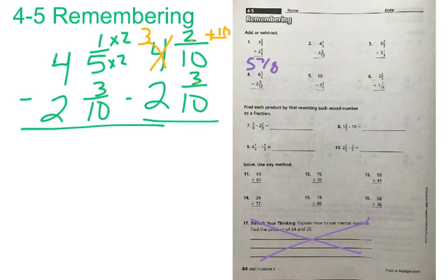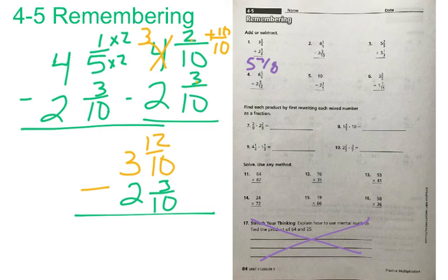So plus 10 tenths. Now what I have is 3 and 12 tenths, and I need to subtract from that my 2 and 3 tenths. Now I can complete my subtraction. 12 minus 3 equals 9. My denominator of 10 stays the same. 3 minus 2 equals 1. So my answer is 1 and 9 tenths.